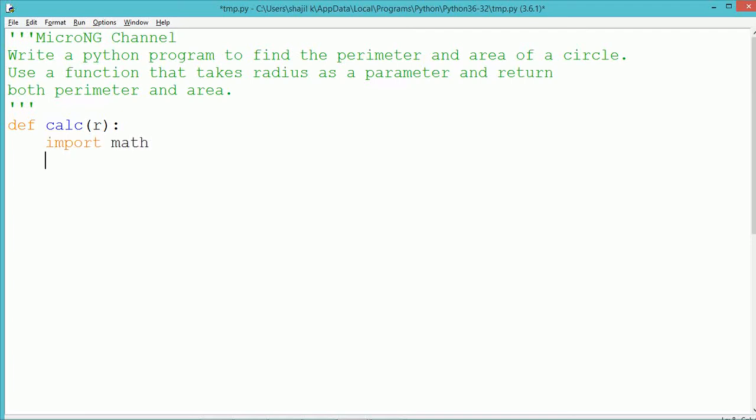To define the function we use the keyword def followed by the function name. The name of the function is calc, and it takes a parameter r that indicates the radius of the circle. To use the value of pi, we import the module math.